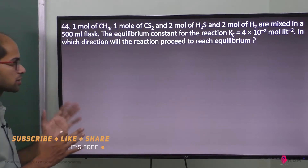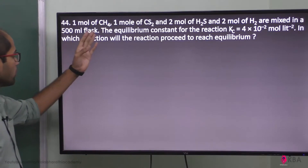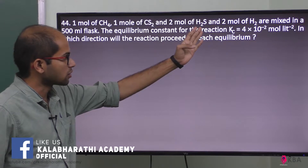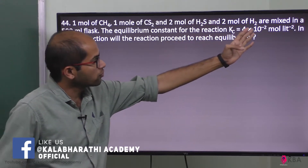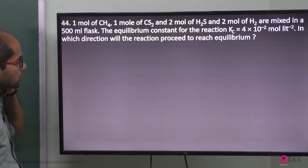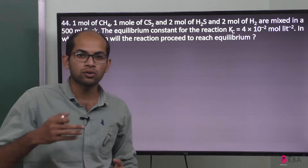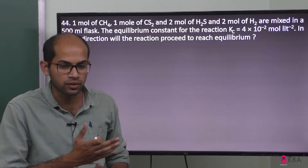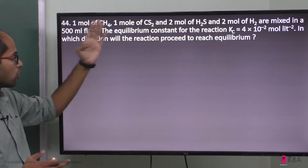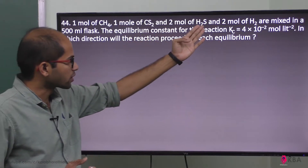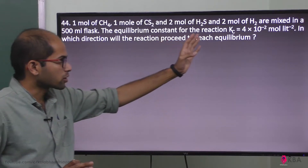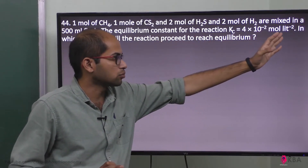We will proceed with the question. 1 mol of CH4, 1 mol of carbon disulfide (CS2), and 2 mol of hydrogen sulfide (H2S), and 2 mol of hydrogen (H2) are mixed in a 500 mL flask. 500 mL is half a liter. The equilibrium constant for the reaction, Kc, is equal to 4 × 10⁻² mol per liter square.